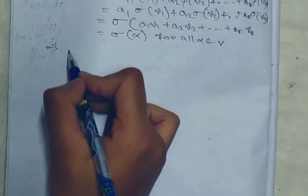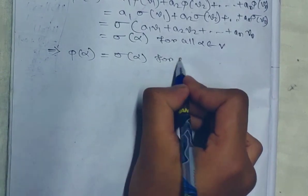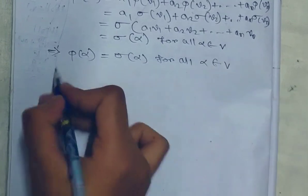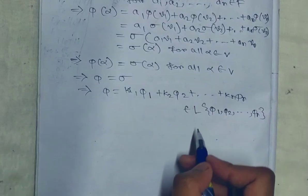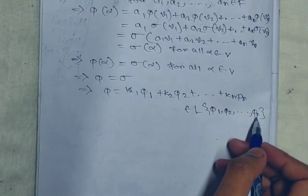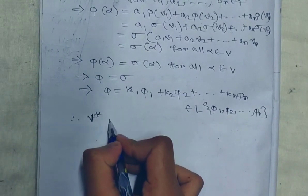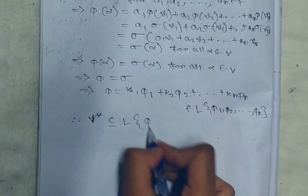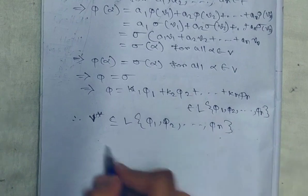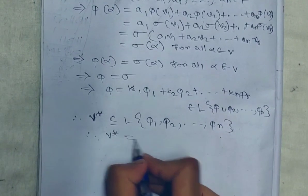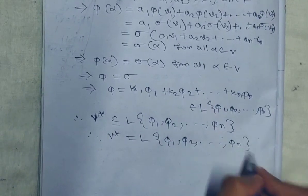That implies φ(α) = σ(α) for all α belonging to V, which implies φ = σ. That implies φ belongs to the linear combination of φ1, φ2, ..., φn. Therefore V* is contained in the linear combination of φ1, φ2, ..., φn, so V* equals the span of {φ1, φ2, ..., φn}.